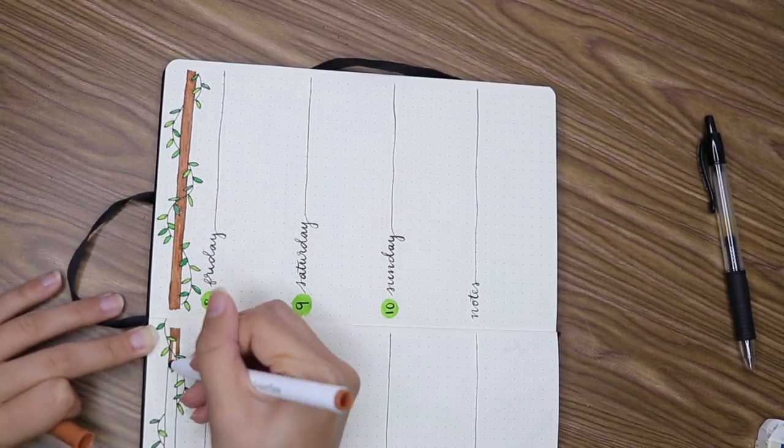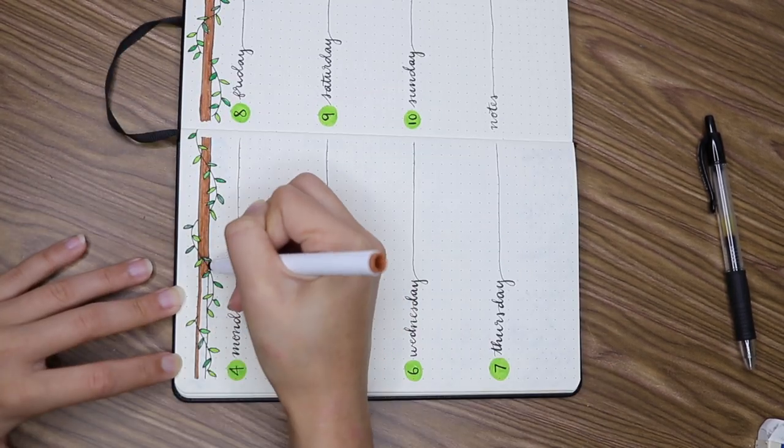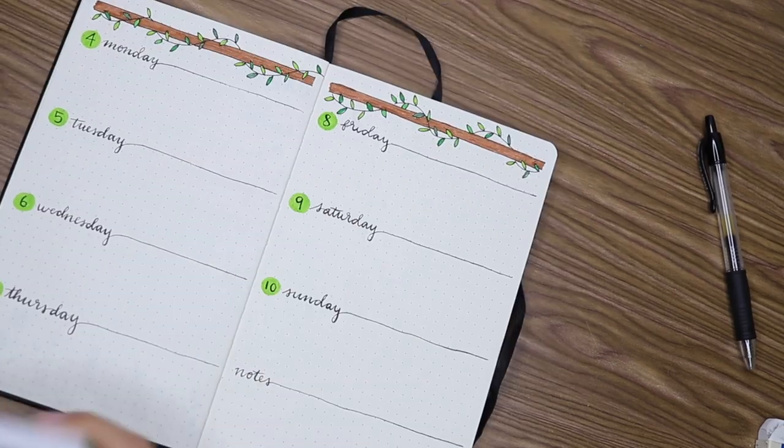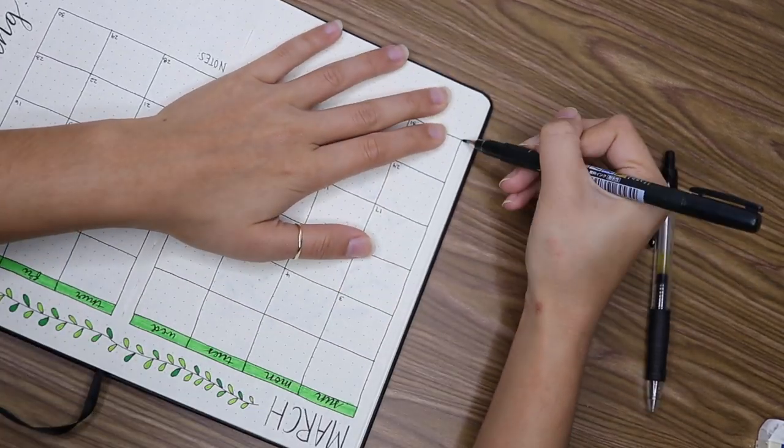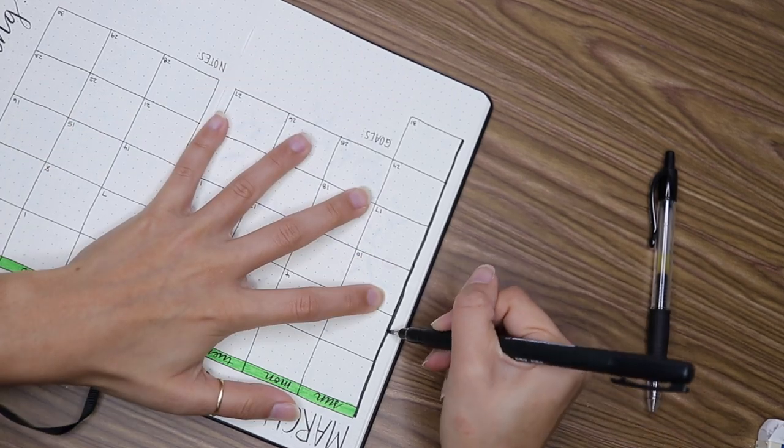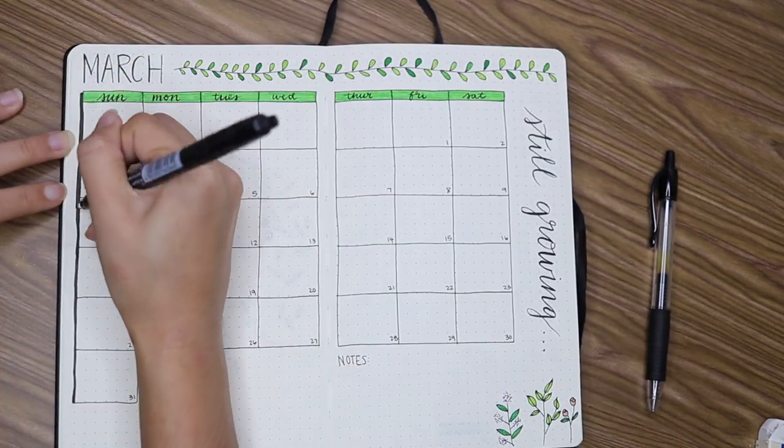So I just lettered the days of the week and trilled off the last letter to act as the divider for the days. And I colored in a green circle in front of each day to indicate the date.